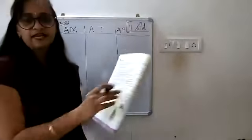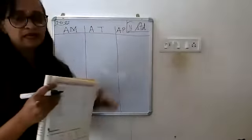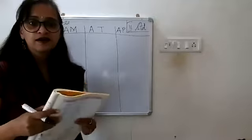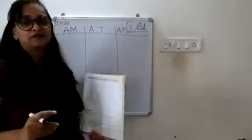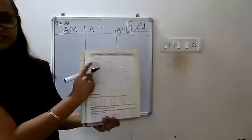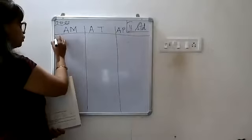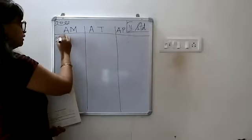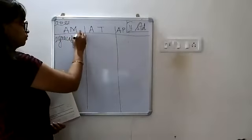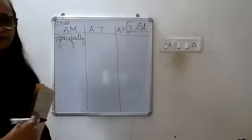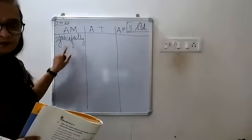The first word is 'gracefully.' Which column does it go under — manner, time, or place? It comes under adverbs of manner. Under the adverbs of manner column, write 'gracefully.'